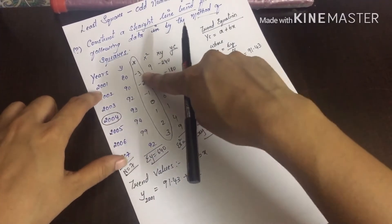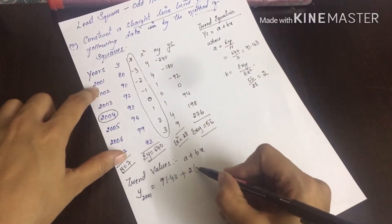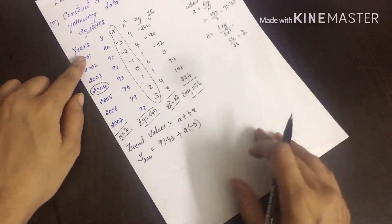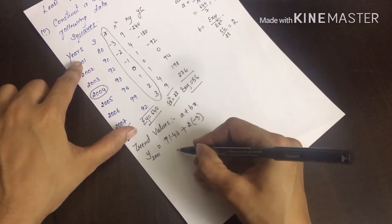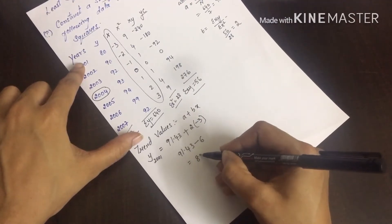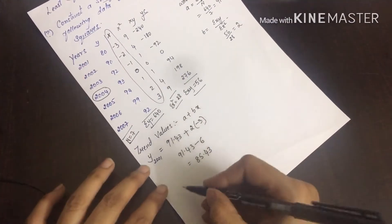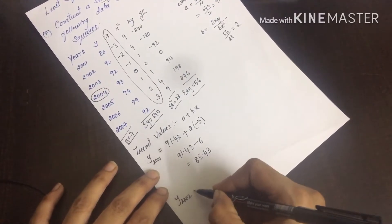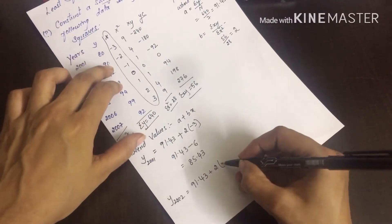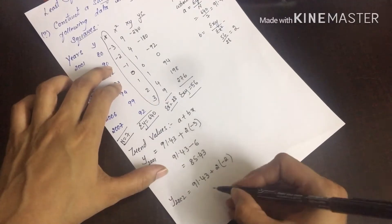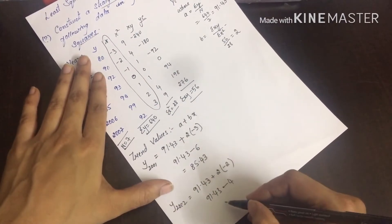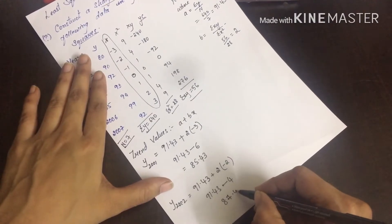Now let's find the trend value for 2001. We take x equals minus 3. So 91.43 plus 2 into minus 3, which is 91.43 minus 6, equals 85.43. For 2002, it is 91.43 plus 2 into minus 2, which equals 87.43.